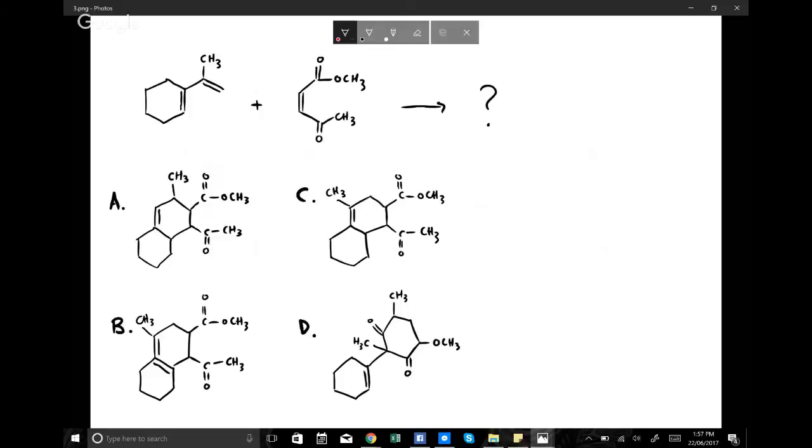Okay, so here we have a new problem. We've got two reactants and we're asked what is the final product going to be. Now the first thing that we want to do is identify which one is the diene and which one is the ethene. And sometimes it can be, it could be on purpose or not, but it can be a bit confusing as to which one is which.